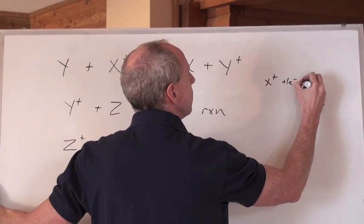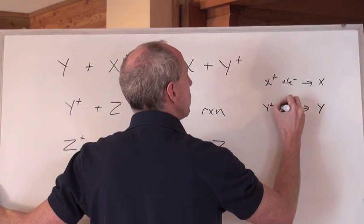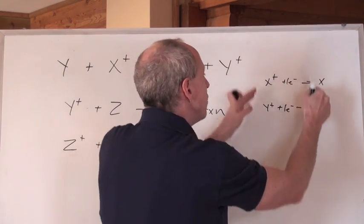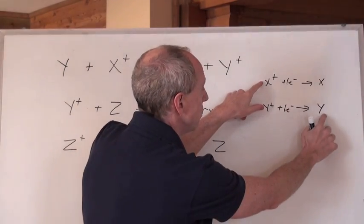So now you've kind of figured out the relative positions of this. So this is X positive plus one electron makes X, and this is Y positive plus one electron makes Y. These are the two reduction half reactions. This is the oxidizing agent, this is the reducing agent, it's a spontaneous reaction.